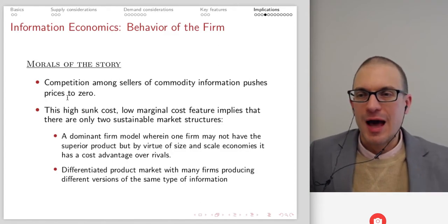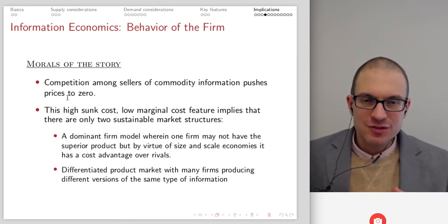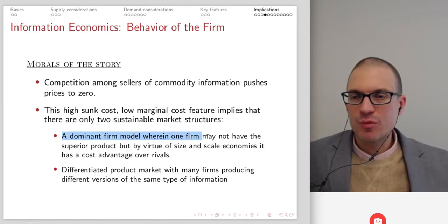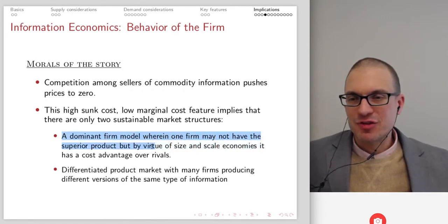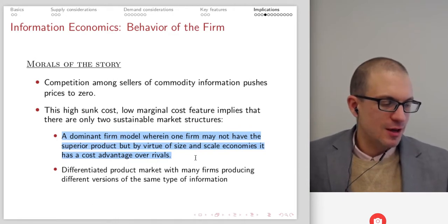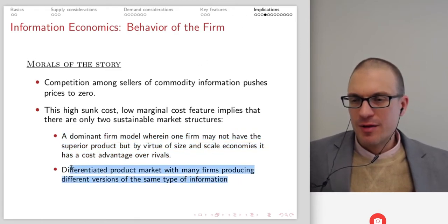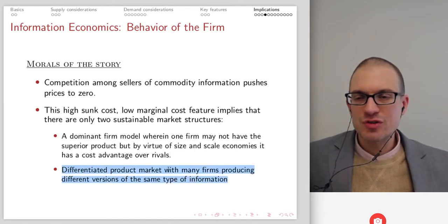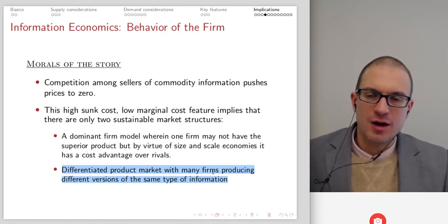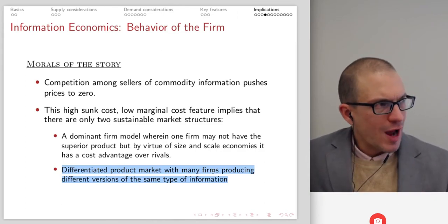The moral of the story: competition among sellers of the commodity is going to push prices to zero in the case of information goods. The high sunk cost, low marginal cost feature implies there are really two sustainable market structures. You can have a dominant firm — one firm may not have the superior product, but by virtue of size and scale it has a cost advantage. Or a differentiated product market with many firms producing different versions of the same type of information, like weather reports with lots of product differentiation in overlay features around the essential core information.